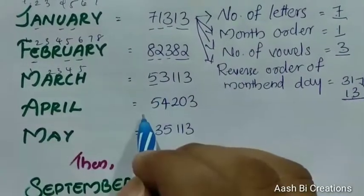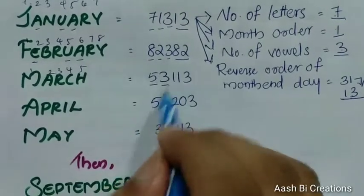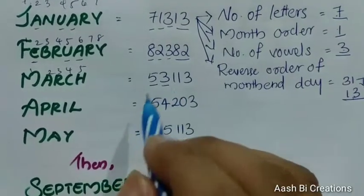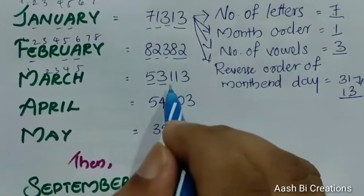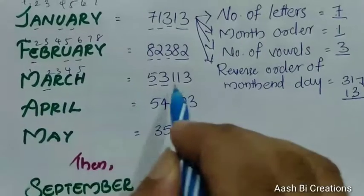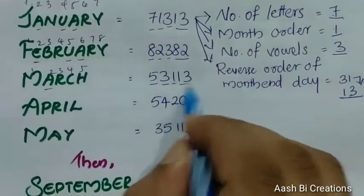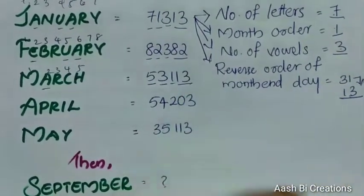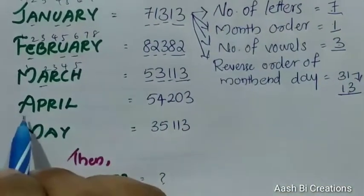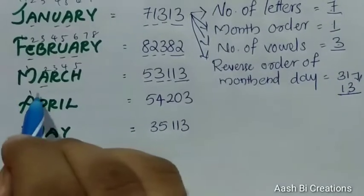Next, March — number of letters is 5. Okay, month of order 3 is correct. The month of order is 5: 1, 1, 3. 31 days is 1, 3.